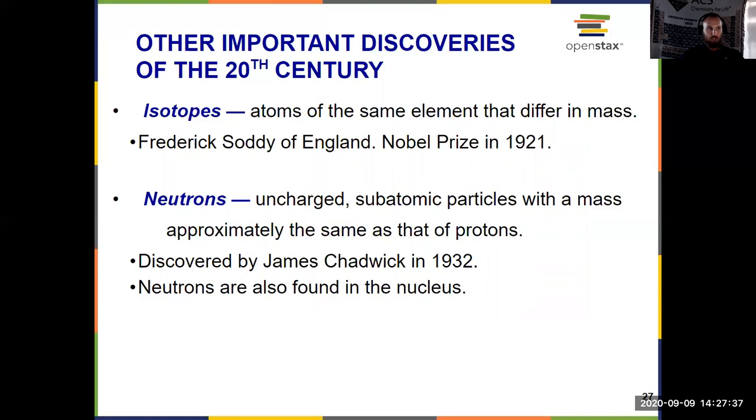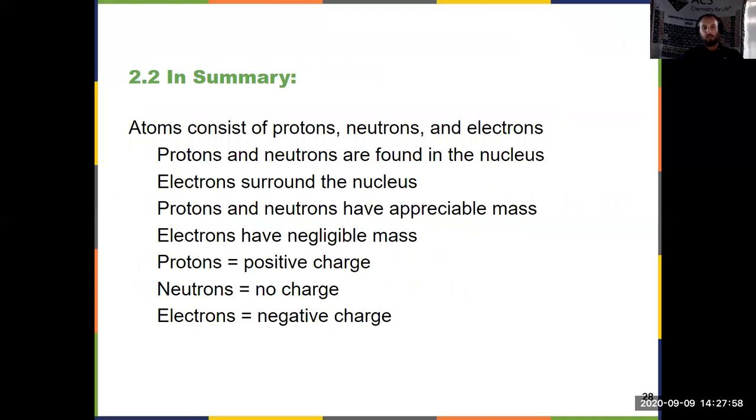Neutrons are uncharged subatomic particles with mass, give or take the same of protons. And they were discovered by James Chadwick in 1932. And they are also in the nucleus. So Rutherford, that's a huge one. Gold foil gave us nucleus and protons. And electrons came from the cathode ray tube and the Millikan oil drop experiment.